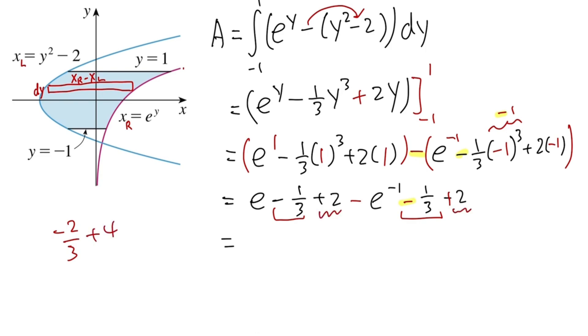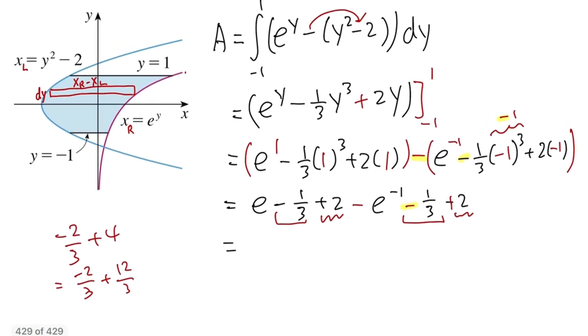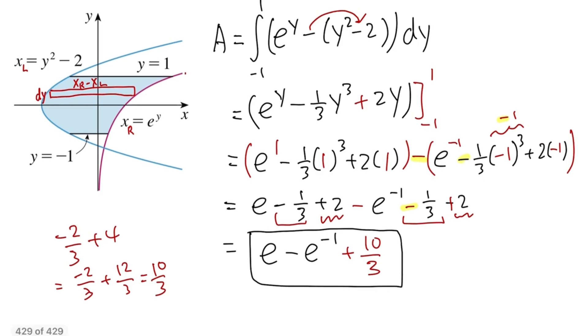So that's the same as negative 2 over 3 plus... No, we need the denominator 3. So 12 over 3. So that will be positive 10 over 3. And for the exponential power, we'll just leave it like that. So we have e minus e to the negative 1, and lastly, plus 10 over 3. And that will do it.